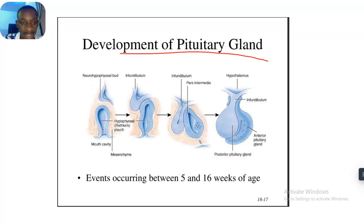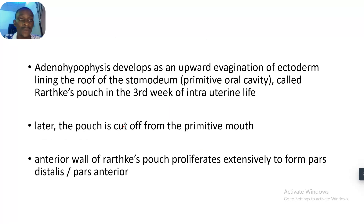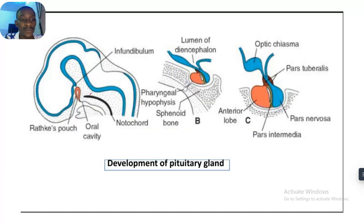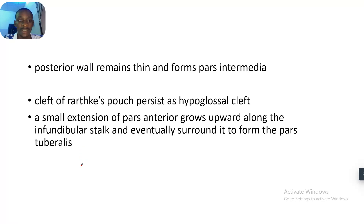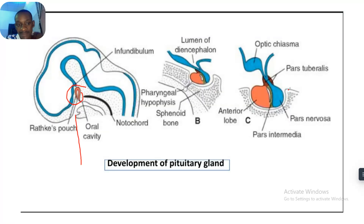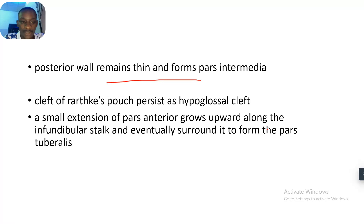This is Rathke's pouch — normally these embryology videos make sense after watching them at least three times. This is the development of Rathke's pouch and this is the adenohypophysis. The posterior wall remains thin and forms the pars media.